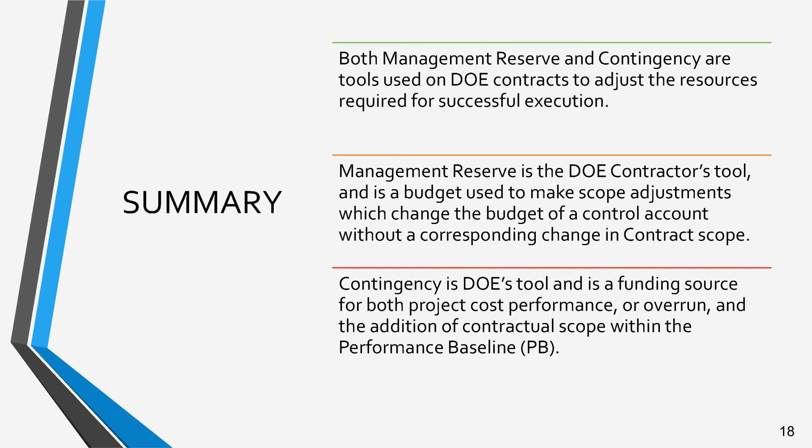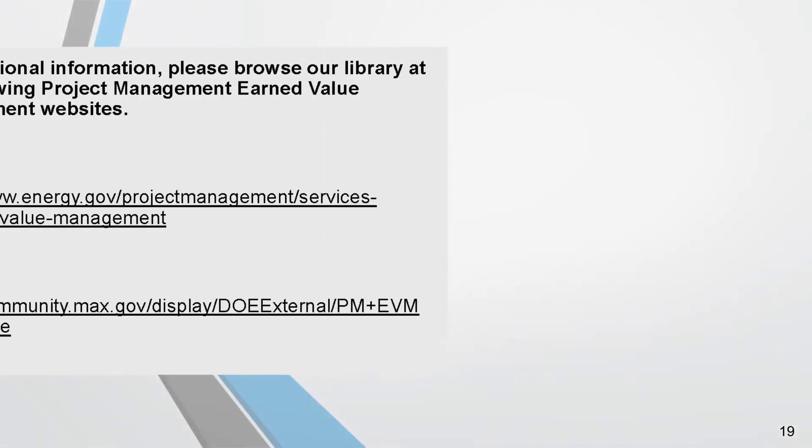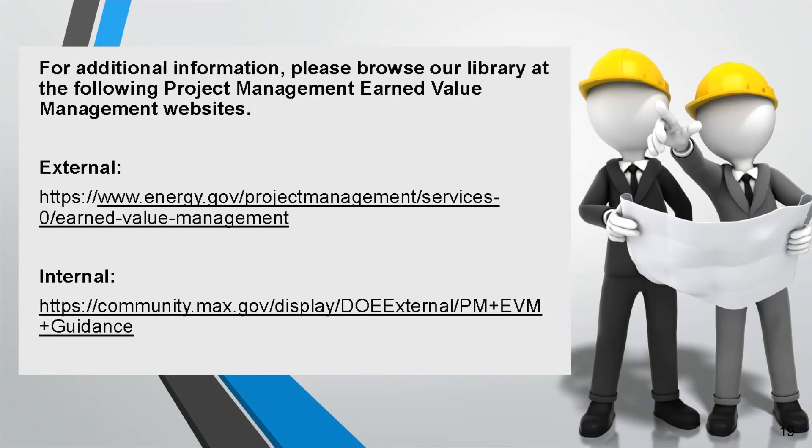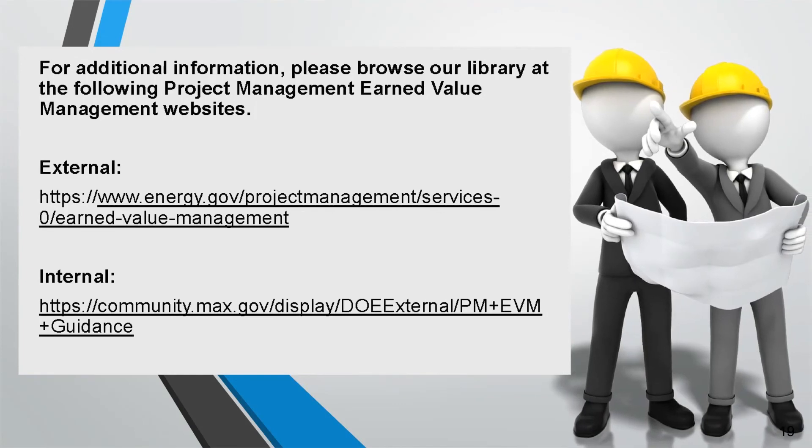No contractual change is required for MR use. Contingency is DOE's tool and is a funding source for both project cost performance and for the addition of contractual scope within the project's performance baseline. Please refer to Snippet 6-3-B for a discussion of different management reserve and contingency detailed scenarios of how normal project changes impact the performance measurement baseline, management reserve, projected variances at completion, and DOE contingency.